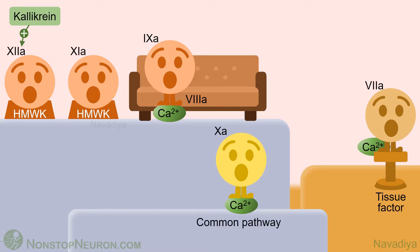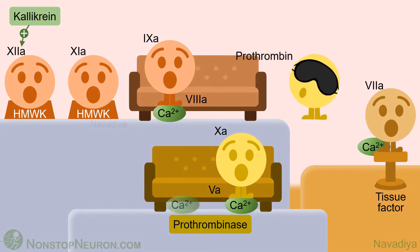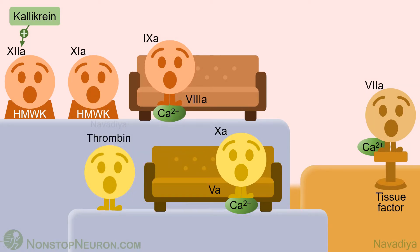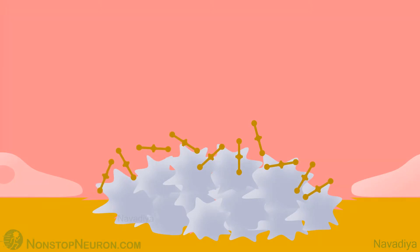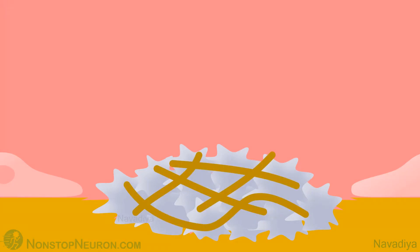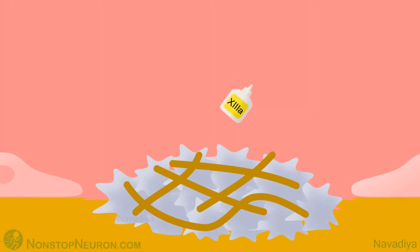Now let's move to the common pathway. Here, factor 10 associates with factor 5a and forms one more complex along with calcium and phospholipid, called prothrombinase. As per its name, it acts on inactive prothrombin and converts it into active thrombin. Thrombin thus generated converts fibrinogen into fibrin monomers. Multiple fibrin monomers undergo spontaneous polymerization to form fibrin polymers, which create a loose mesh around platelets. Finally, factor 13, also called fibrin stabilizing factor, is activated by thrombin to factor 13a. It causes covalent crosslinking of fibrin polymers to form stable fibrin. Coagulation thus converts the primary platelet plug into a definitive clot.